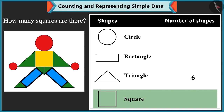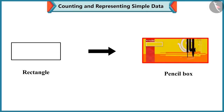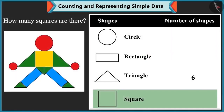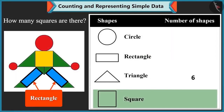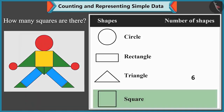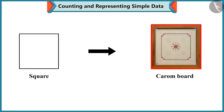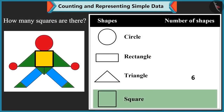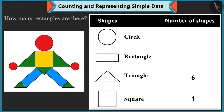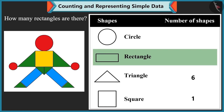Bubbly points to another shape thinking it is a square too, but Mummy explains it is a rectangle — the same shape as her pencil box. The square is shaped like her carom board. So there is only one square. Mummy then asks how many rectangles there are. Bubbly counts 1 and 2 — only 2 rectangles. Absolutely perfect!